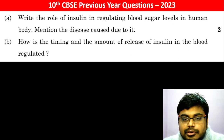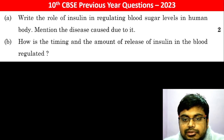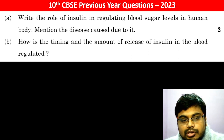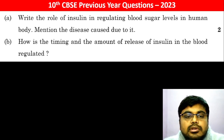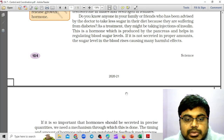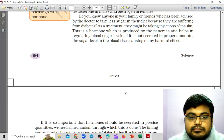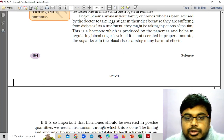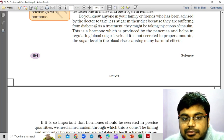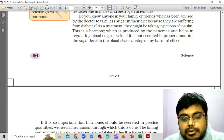Write about the role of insulin in regulating blood sugar levels in the human body and mention the diseases due to it. Do you know anyone in your family or friends who has been advised by the doctor to take less sugar in their diet because they are suffering from diabetes?